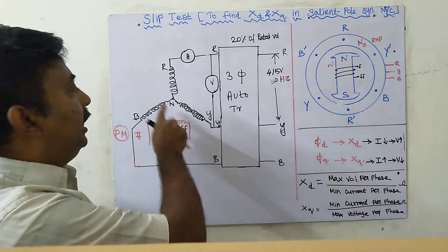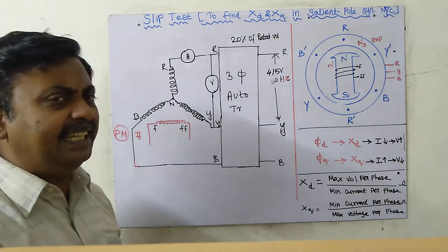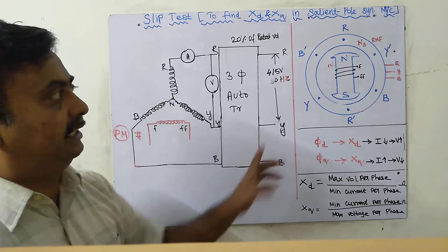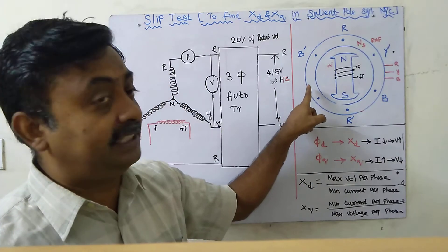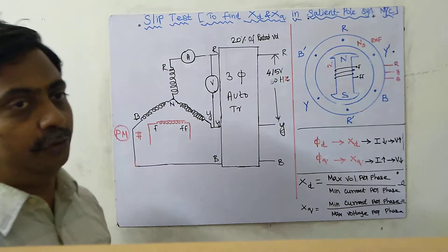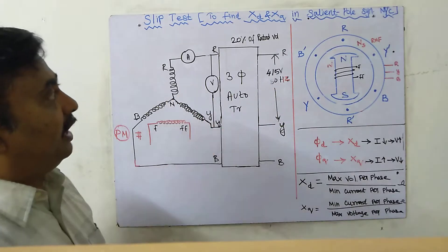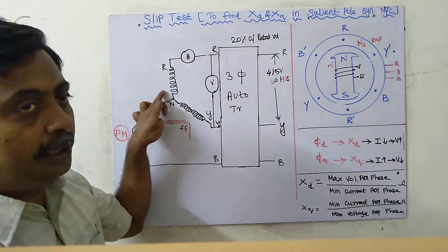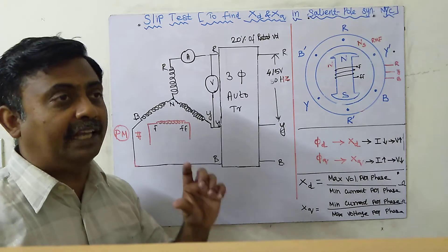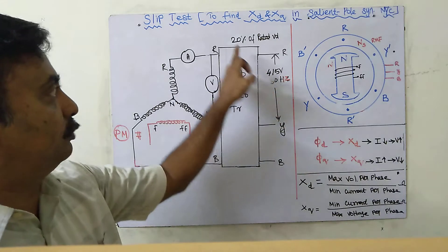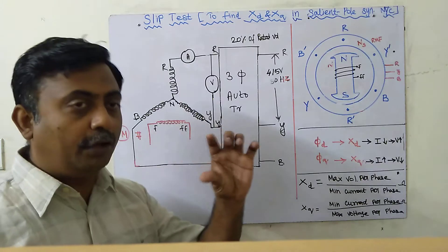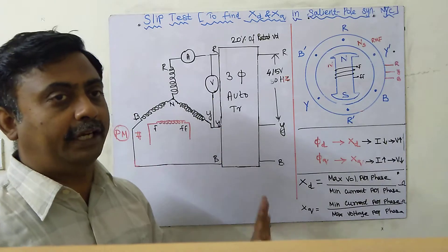Whenever a stator — whether star or delta connected — is given a three-phase supply, a rotating magnetic field is produced. In a synchronous motor, we rotate this field to synchronous speed and achieve magnetic locking. Here, we are applying only 20% of the rated voltage, so the rotating magnetic field will be produced at synchronous speed, but its flux magnitude will be very small because the supply voltage is only 83V.